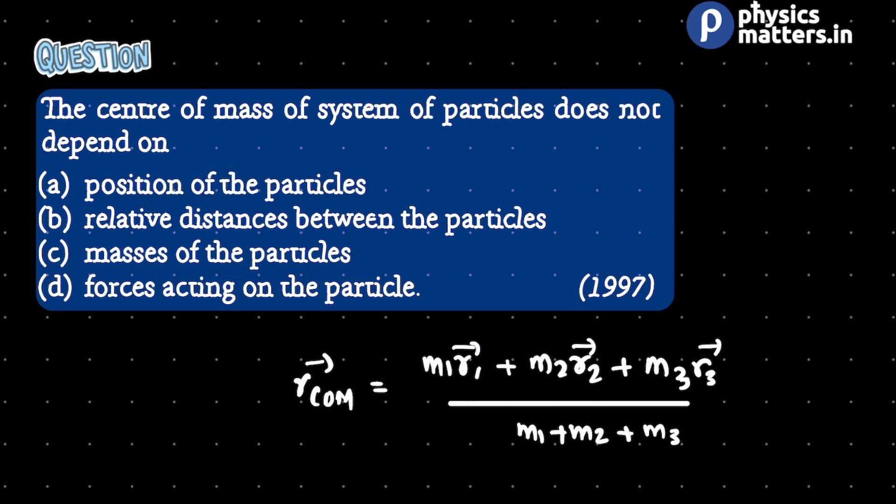So the clear idea is, it depends on, certainly or explicitly, it depends on the other three factors, but not the fourth one. So the correct answer is D, D for Delhi, D for doctor is the correct answer. Thank you.